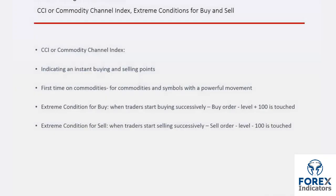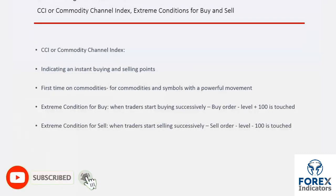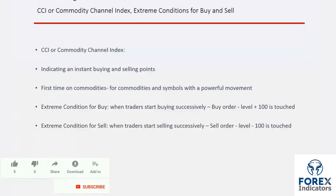CCI, or Commodity Channel Index, was first used on commodity markets that have volatile movements and trends. Nowadays, traders exploit this oscillator on all financial markets, especially on volatile symbols, to detect extreme regions. CCI is based on a momentum oscillator.